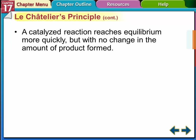A catalyzed reaction reaches equilibrium more quickly, but there's no change in the amount of product produced. A catalyst doesn't change the reaction — it just speeds it up. In an equilibrium situation, a catalyst doesn't change the equilibrium position; it just gets us there faster. That's the end of the video — answer the questions below and I'll see you in class tomorrow.